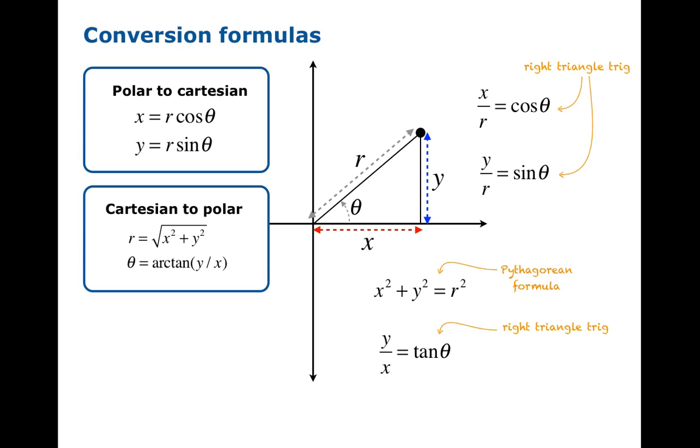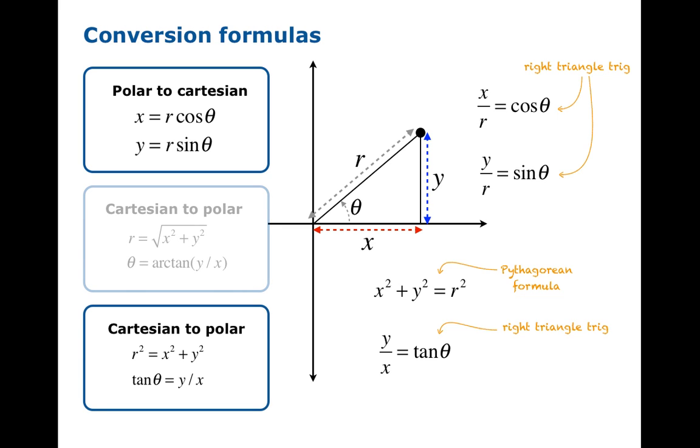But this isn't really the best way to think about this conversion. Because of the ambiguity we talked about, this is not the only theta that works. And then there's a bigger problem than that. The range of arctan isn't quite big enough to capture all the possibilities. So really, you want to keep your relationship like so. Think of the Cartesian to polar conversion formulas as being r² = x² + y², and tan θ = y/x. This allows for negative r to work. It allows for the ambiguity you want to keep in your mind when you're working with polar coordinates.